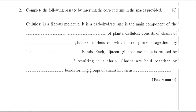Each adjacent glucose molecule is rotated by 180 degrees — it's flipped on its head — resulting in a chain. Chains are held together by hydrogen bonds. Remember the long straight chain of beta glucose: you've got the OH groups pointing up and down from the beta glucose molecules, and they can form hydrogen bonds between the chains.